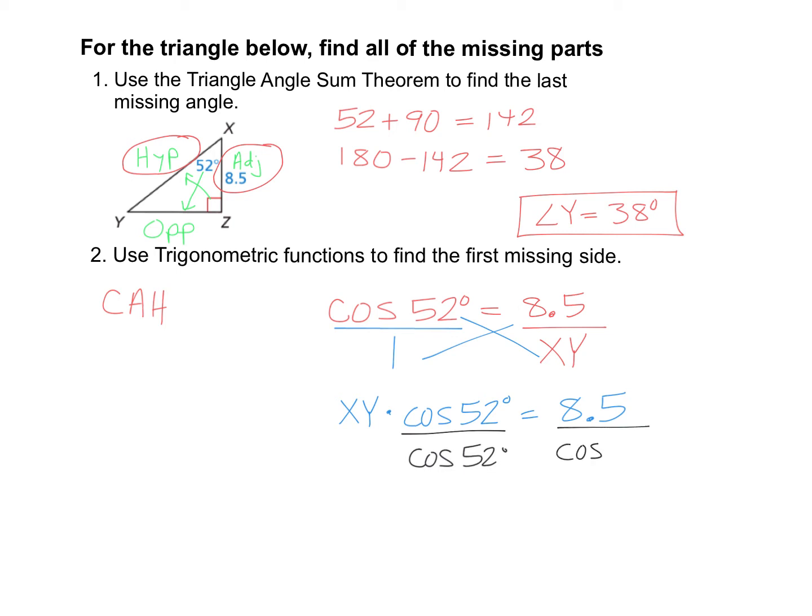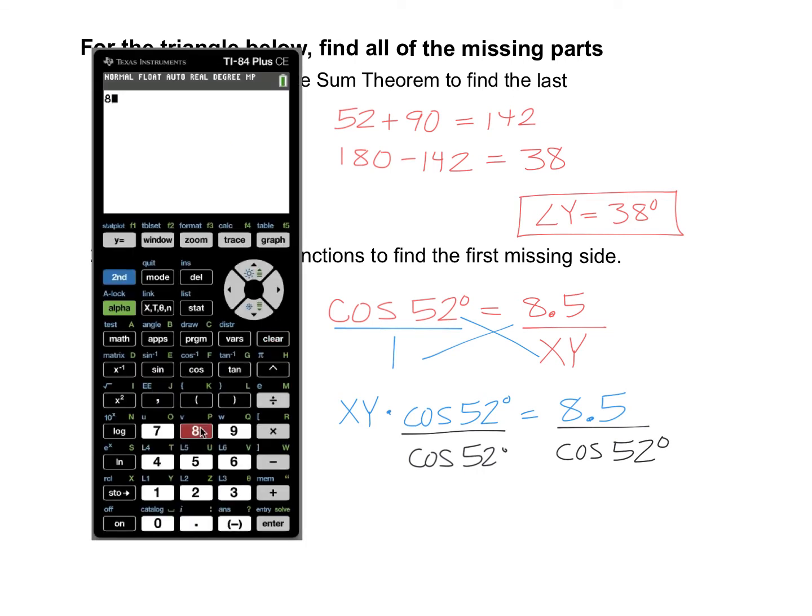So we need to do 8.5 divided by the cosine of 52 degrees. 8.5 divided by the cosine of 52 degrees is 13.8. I rounded that to one decimal place. So our final answer here is side XY equals 13.8.